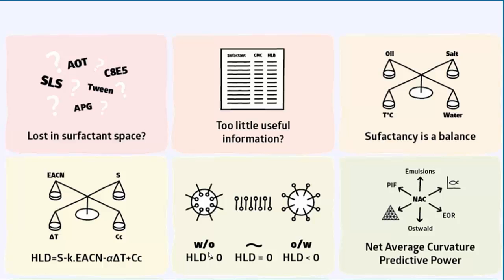If you add to HLD, NAC — net average curvature — then you get even more predictive power. You can actually predict fish diagrams, extended oil recovery, emulsion behaviour, phase inversion formulations, asphalt ripening, and even phase diagrams.